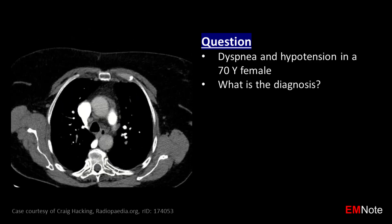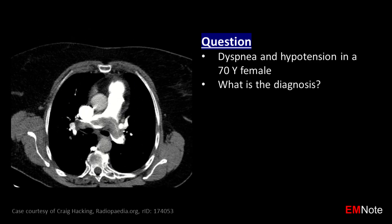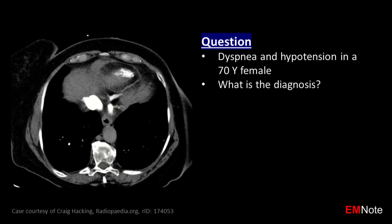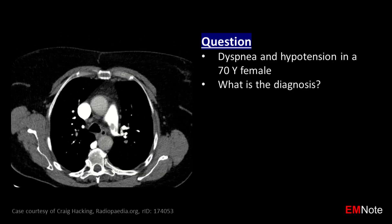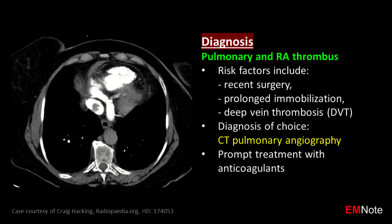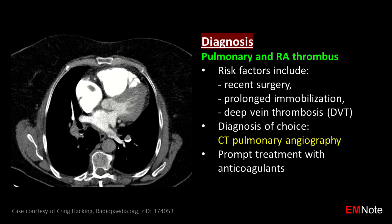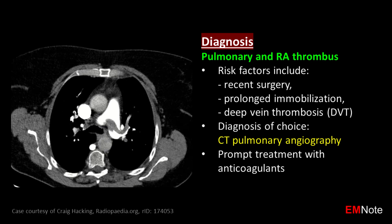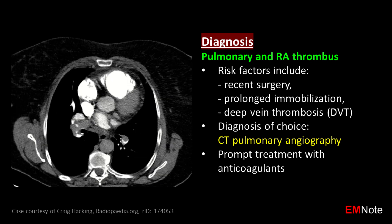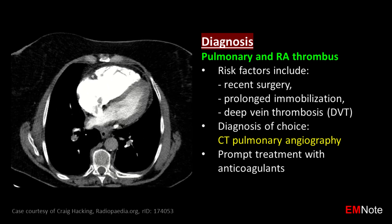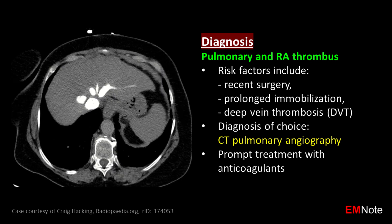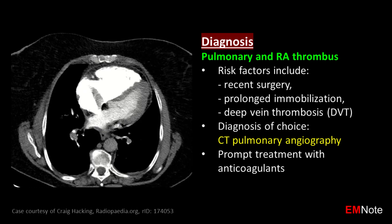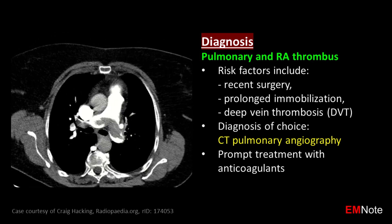A 70-year-old female presents with dyspnea and hypotension. The diagnosis is pulmonary and right atrial thrombus. Risk factors of pulmonary embolism include recent surgery, prolonged immobilization, and deep vein thrombosis. The diagnostic test of choice is CT pulmonary angiography. Prompt treatment with anticoagulants is crucial to prevent further complications.